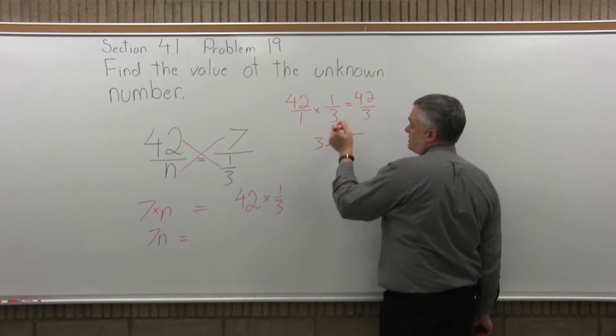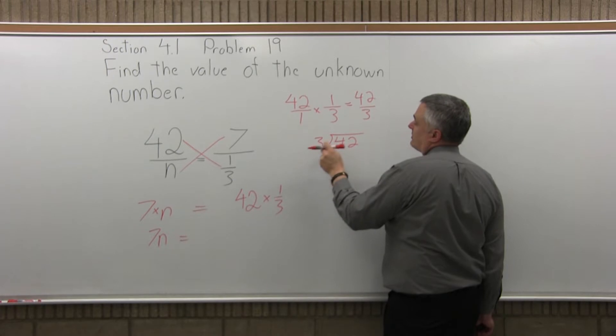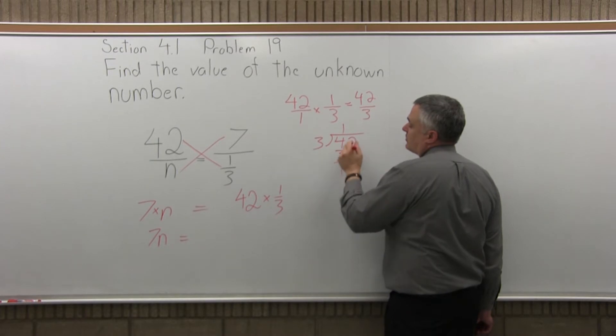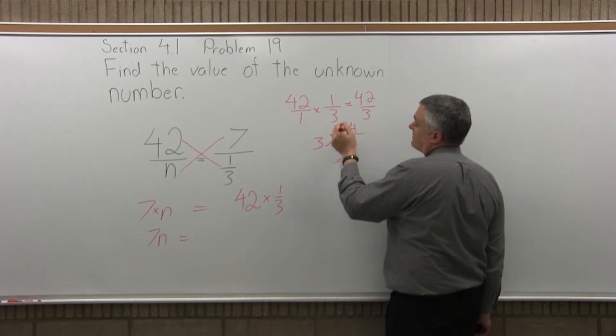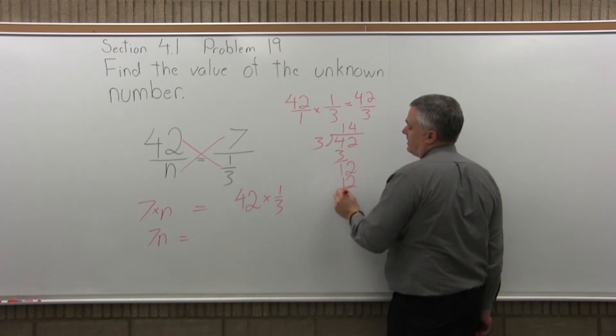3 divides into 4 once. 1 times 3 is 3. 4 minus 3 is 1. Bring down the next digit, which is 2. 3 divides into 12 evenly, exactly 4 times. 4 times 3 is 12. Remainder is 0.